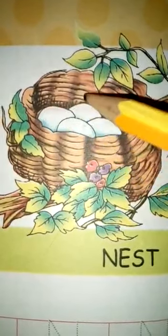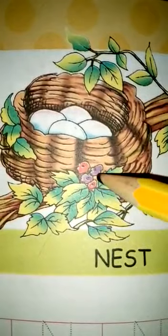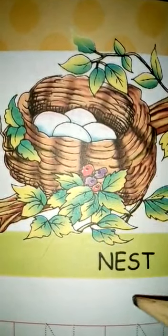In the nest there are some eggs. See, one, two, three, four, four eggs. And the leaves are here, the branches, the flowers are here. So N for nest.